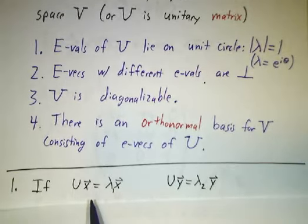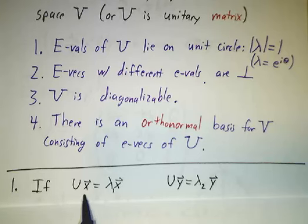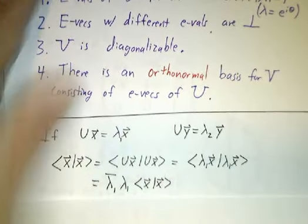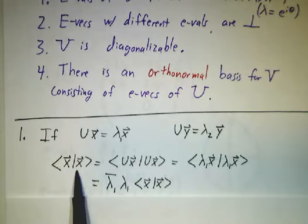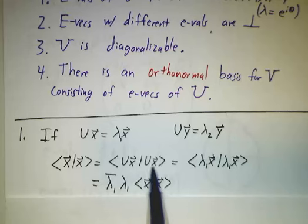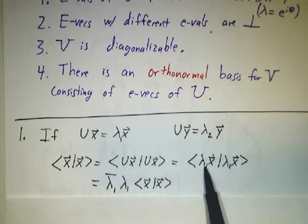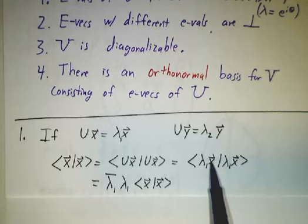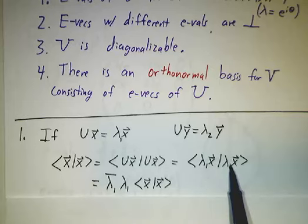First, let's suppose that we have a unitary matrix, and x is an eigenvector with eigenvalue λ1, and y is an eigenvector with eigenvalue λ2. So the inner product of x with itself is the inner product of Ux with Ux because U preserves inner products. It's the inner product of λ1x with λ1x. When you pull this λ1 out of the inner product, you get a λ1 bar.